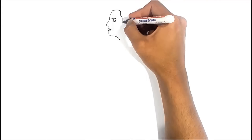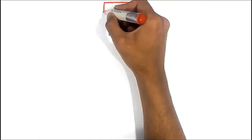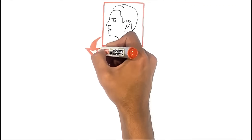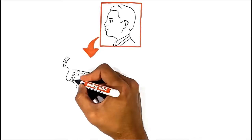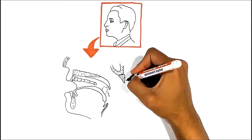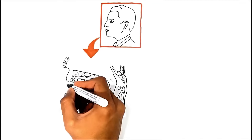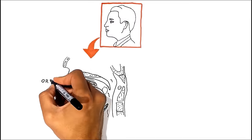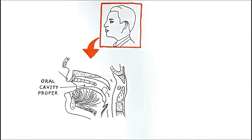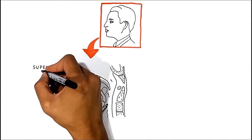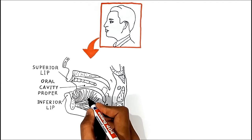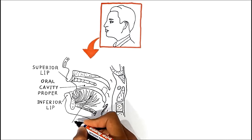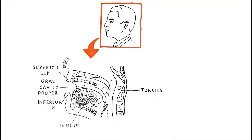Now, let me draw here the view of the oral cavity from the side and make some additional points, especially about the surrounding organs and structures. Here is the oral cavity proper, and over here superior and inferior lip. Right here is your tongue and palatine tonsils.